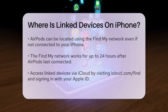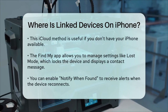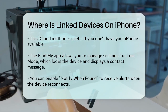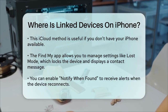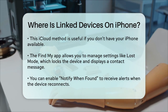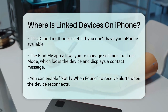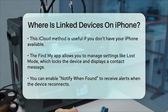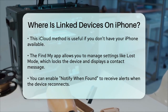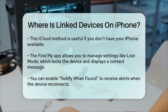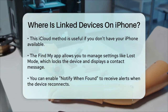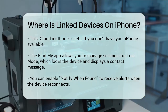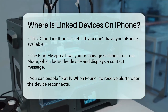In the Find My app, you can also manage other settings like Lost Mode, which locks your device with a passcode and displays a message with your contact information if someone finds it. You can also turn on Notify When Found to get a notification when the device comes back online.